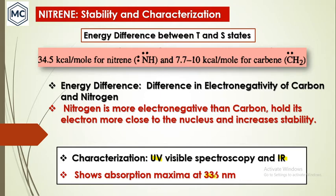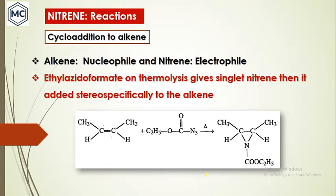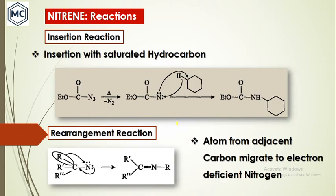The first reaction of nitrene is cycloaddition — addition to an alkyne. In this reaction, the alkyne acts as a nucleophile and nitrene acts as an electrophile. For example, ethyl formate on thermolysis first forms singlet nitrene, then the singlet nitrene stereospecifically adds to the alkyne to form a cyclized product.